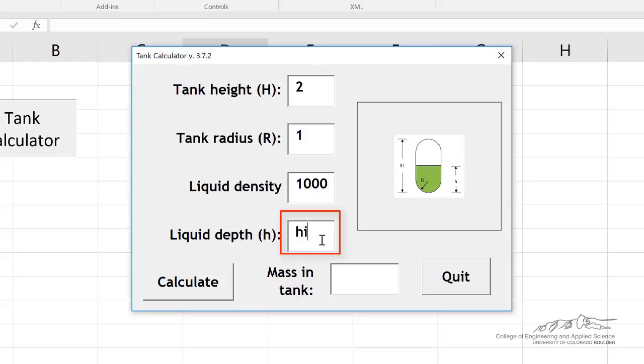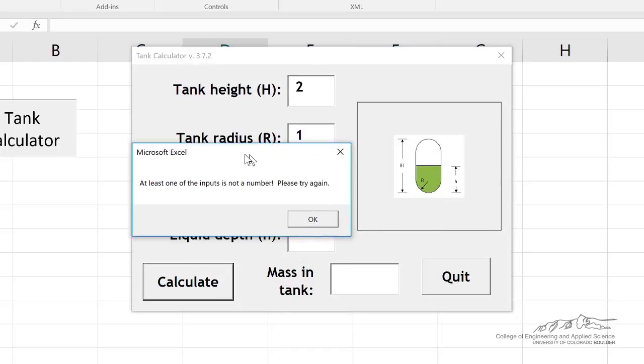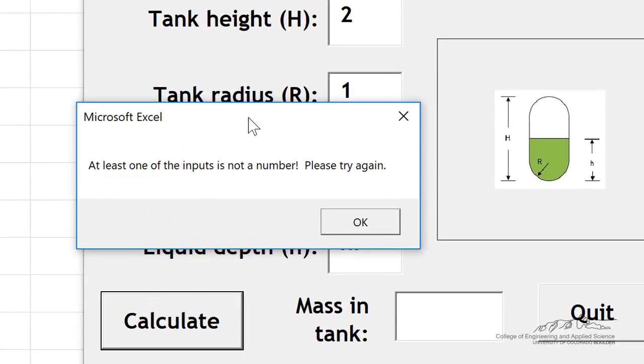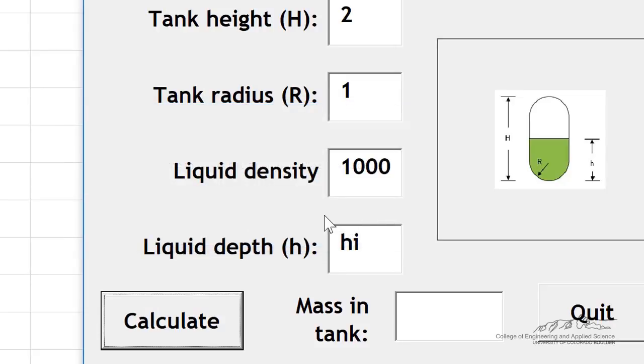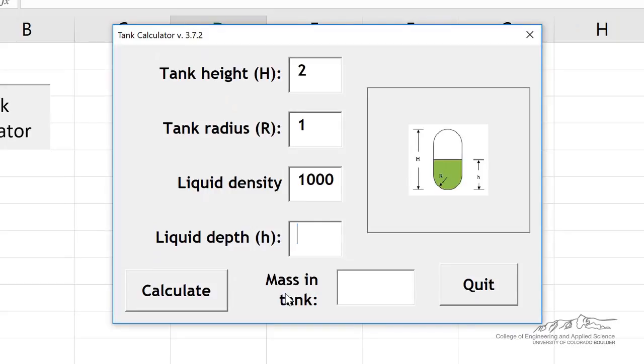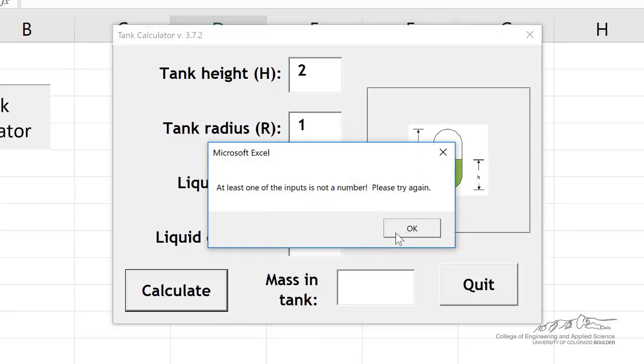So I've got a string here, and when we do that, it says at least one of the inputs is not a number. Please try again. So the idea here is we've validated the input. If we leave it blank, we're detecting that.